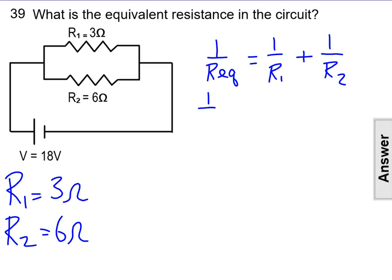Next, we'll substitute in the values for R1 and R2. So we get 1 over 3 plus 1 over 6.